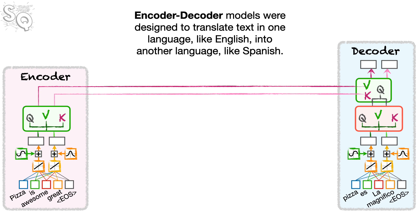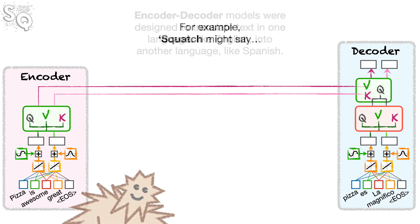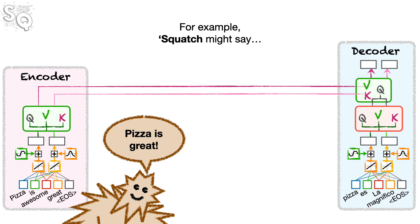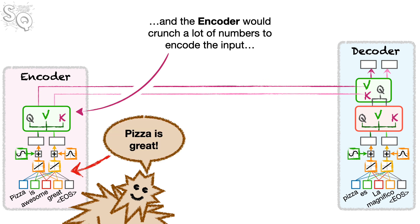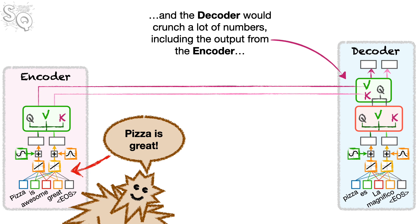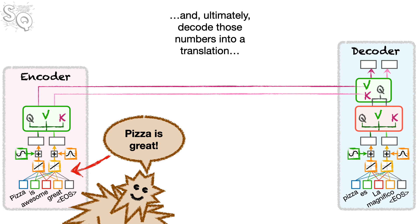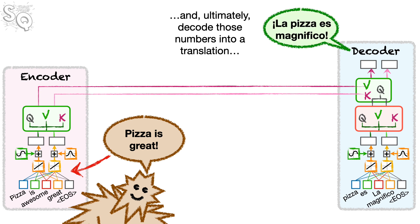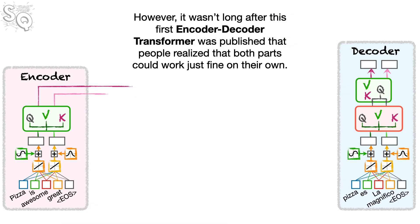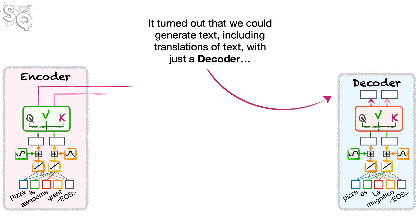Encoder-decoder models were designed to translate text in one language, like English, into another language, like Spanish. For example, Squatch might say 'Pizza is great!' and the encoder would crunch a lot of numbers to encode the input, and the decoder would crunch a lot of numbers — including the output from the encoder — and ultimately decode those numbers into a translation: 'La pizza es magnifico.' However, it wasn't long before people realized that both parts could work just fine on their own.